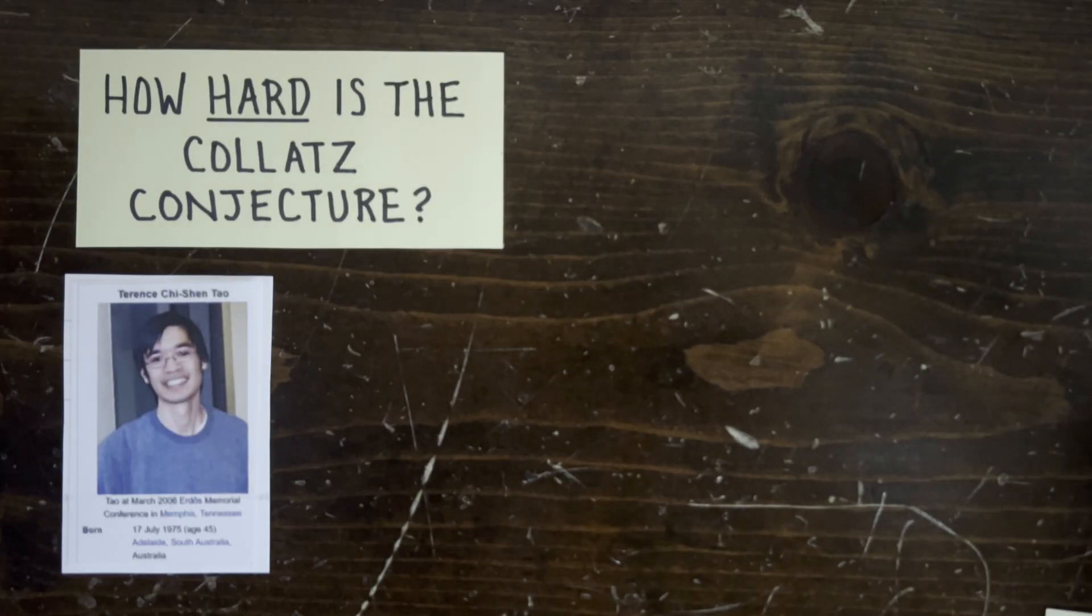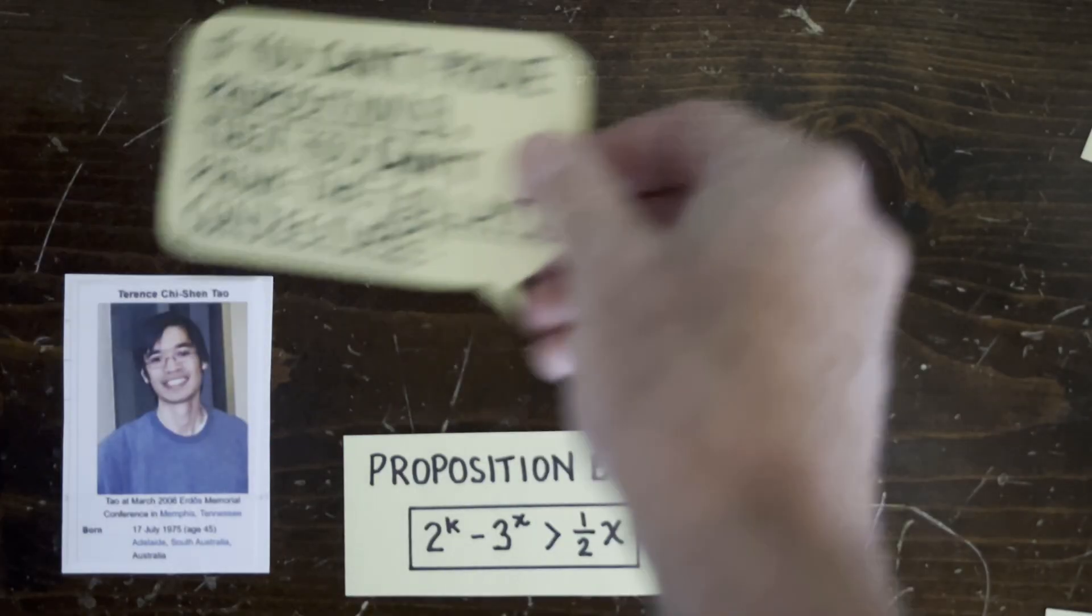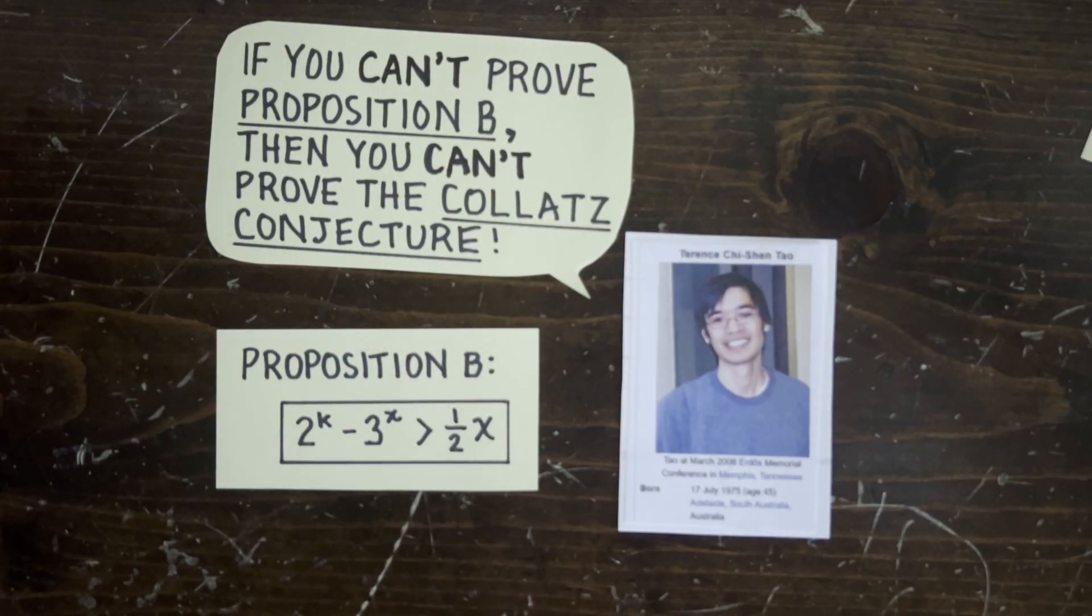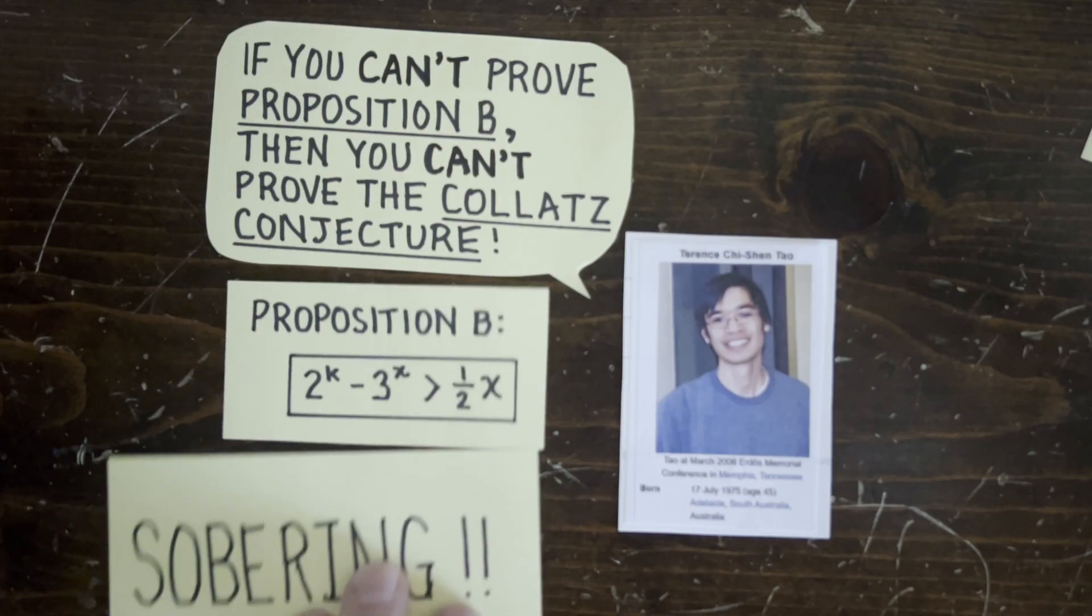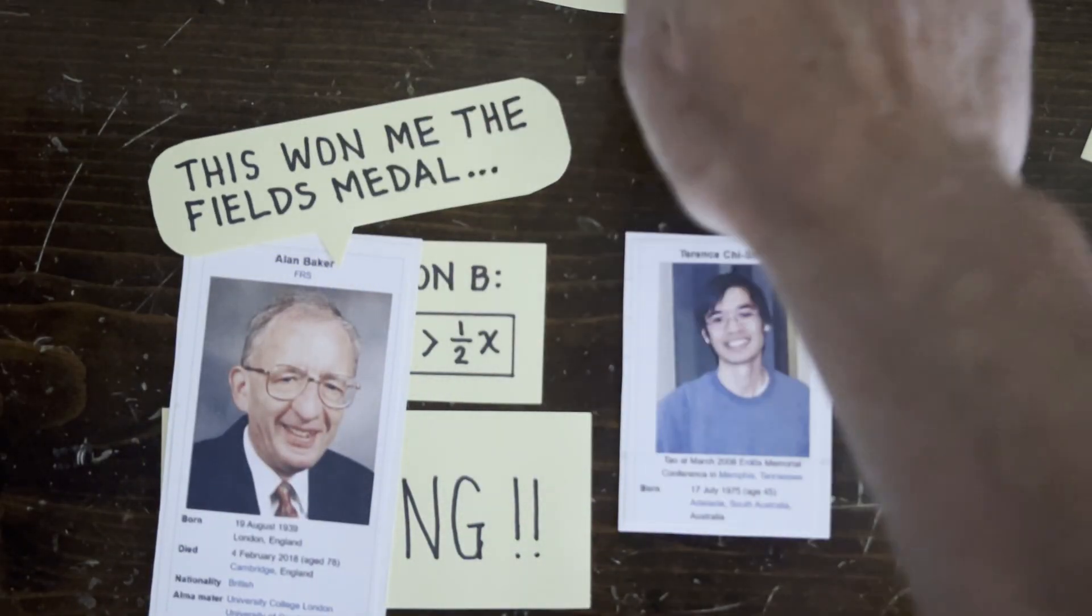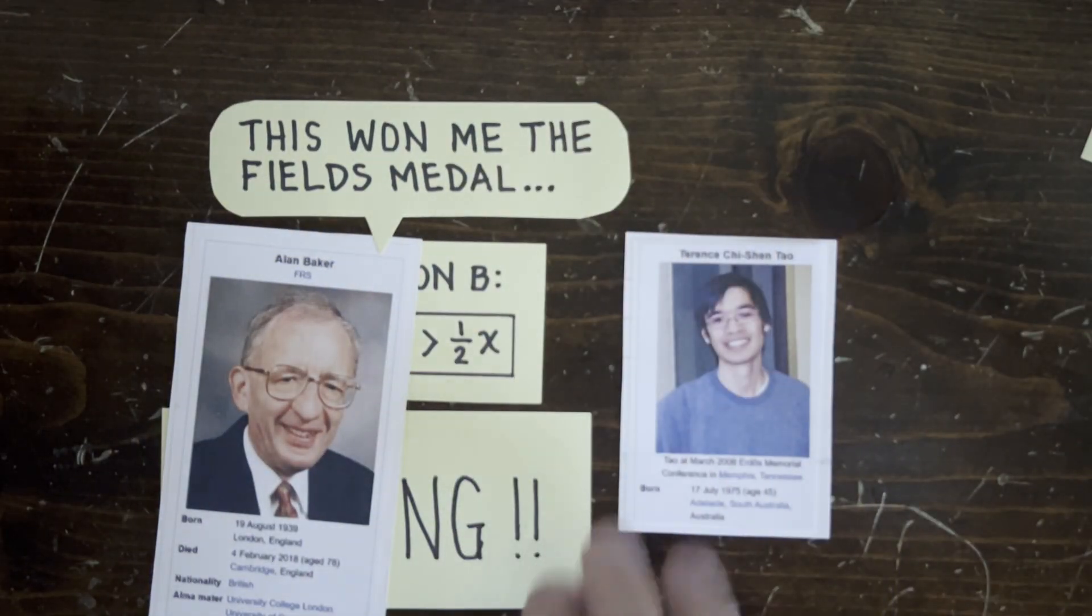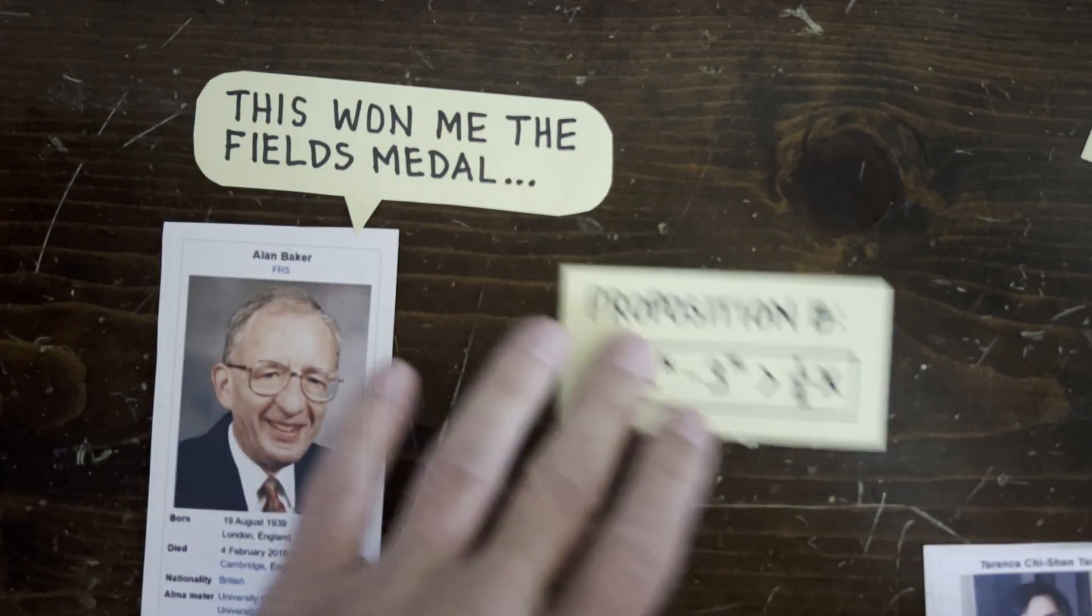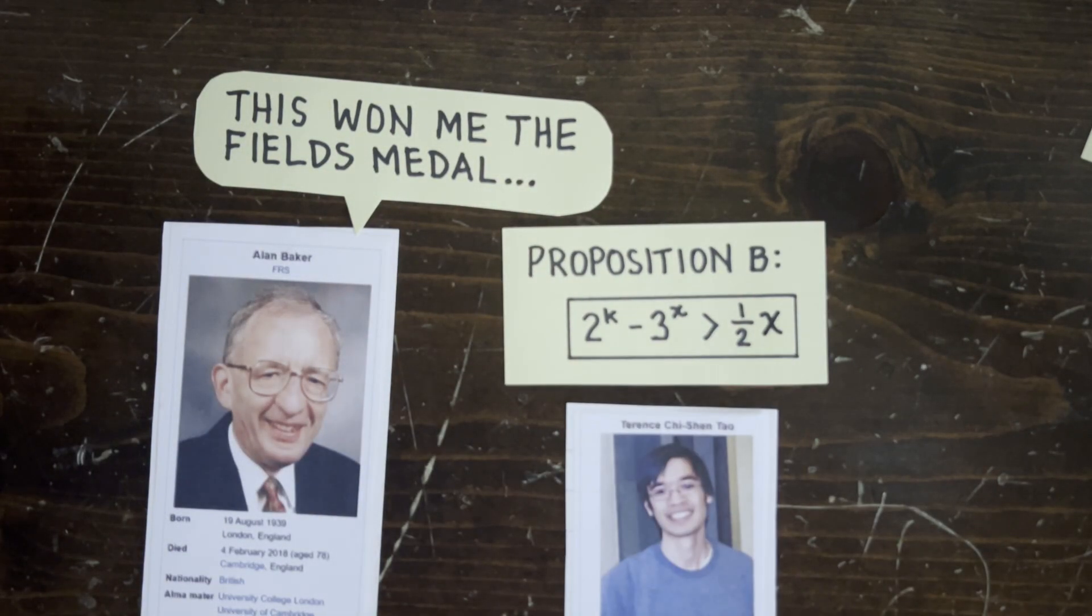Now, Terence Tao came up with a striking result. He said, if you can't prove Proposition B, then you can't prove the Collatz conjecture. Okay, that's super sobering news for a math kook, because Proposition B is known to be very hard. It's a watered-down version of Alan Baker's heavy artillery theorem showing that 2 to the k minus 3 to the x grows exponentially in x, but not too watered down, says Tao.